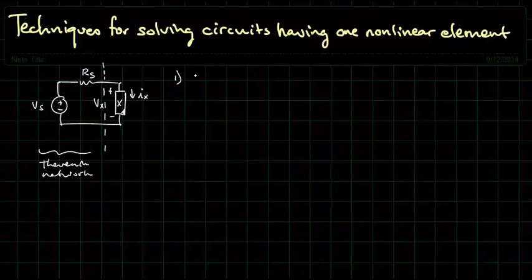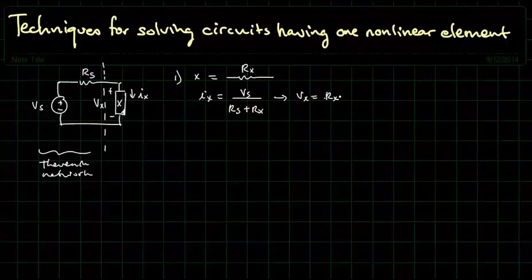Let's consider the case where element x is actually a resistor, Rx. How would we solve that? A number of ways that we know how to solve it. We could calculate I of x as simply Vs over the total resistance. And then we could write Vx is equal to Rx times Ix. That might be one way.